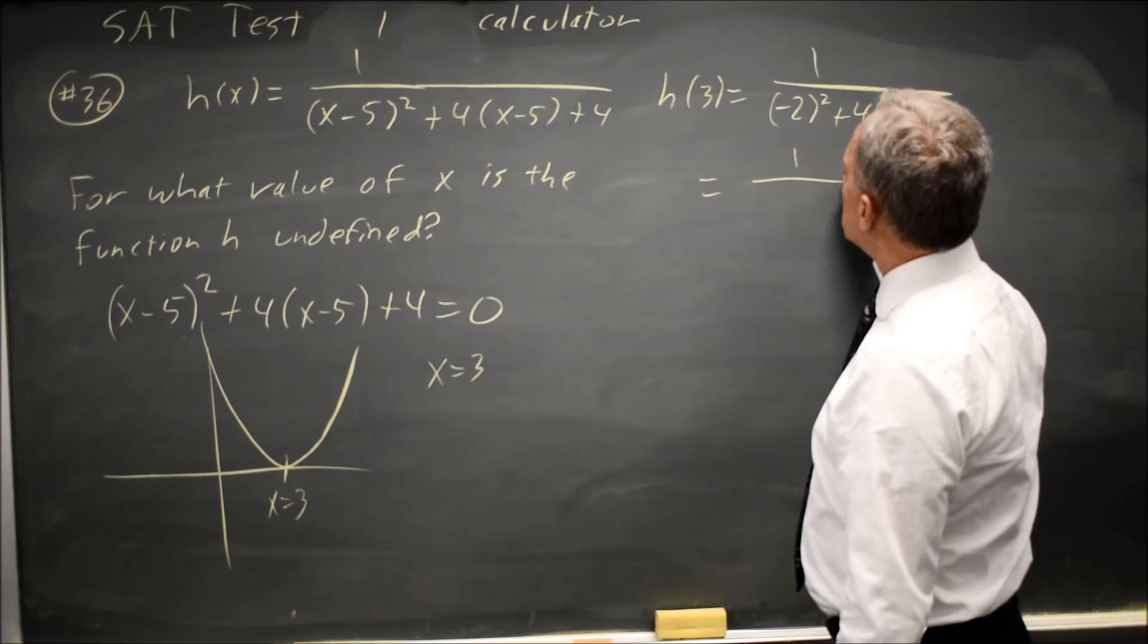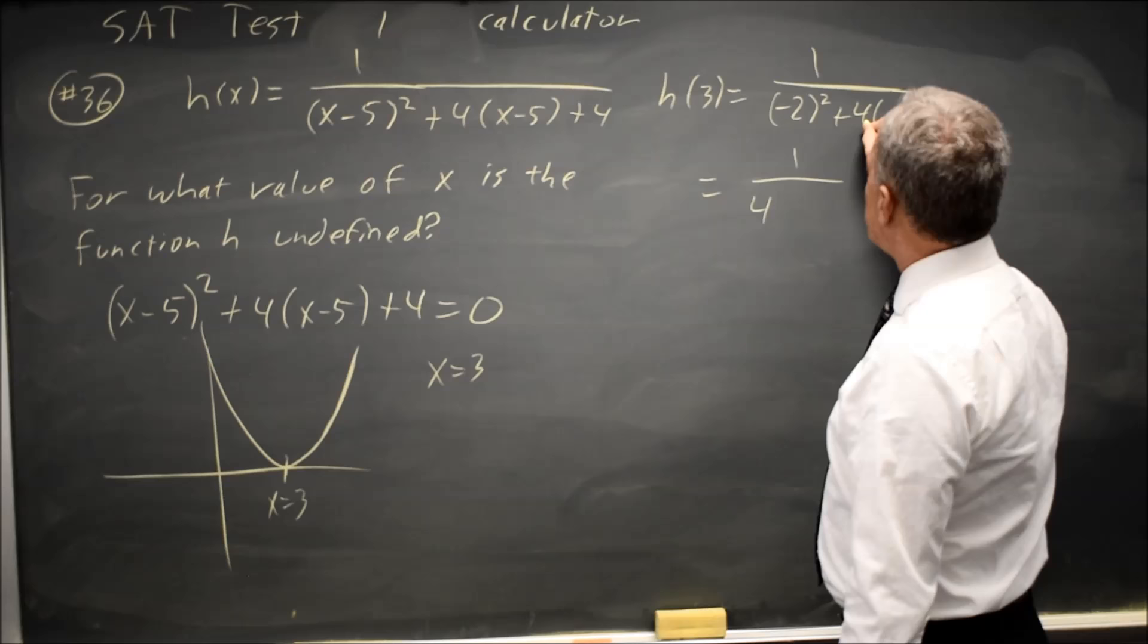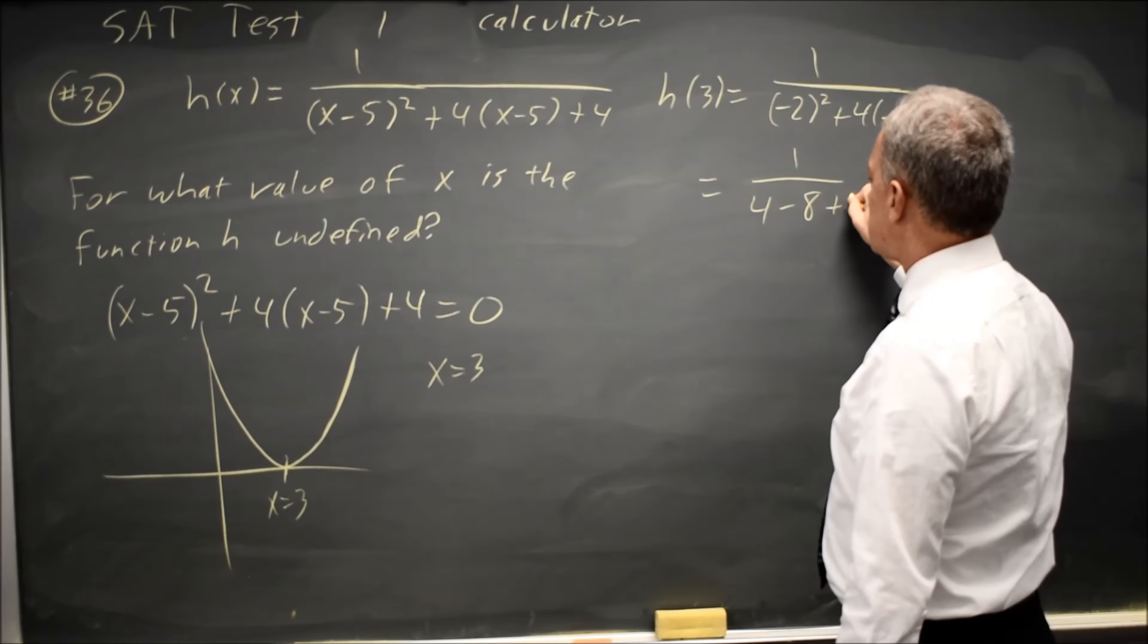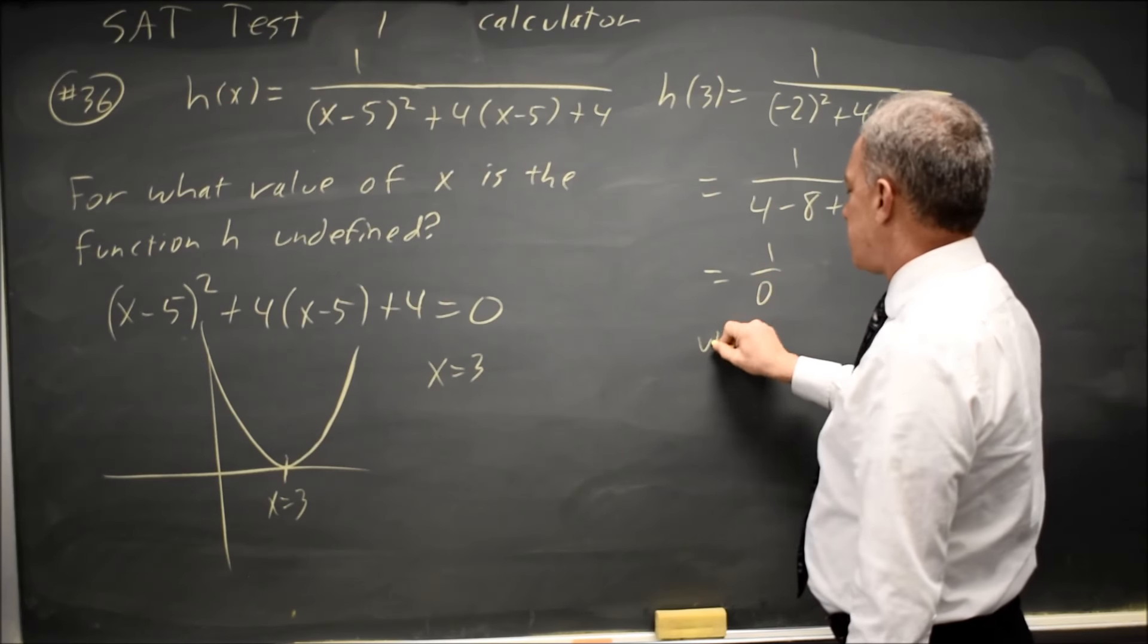So that is 1 over (-2)² is positive 4. 4 times -2 is -8 plus 4, which is 1 over 0, undefined.